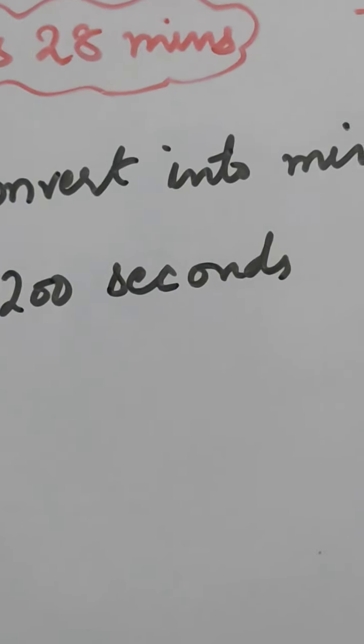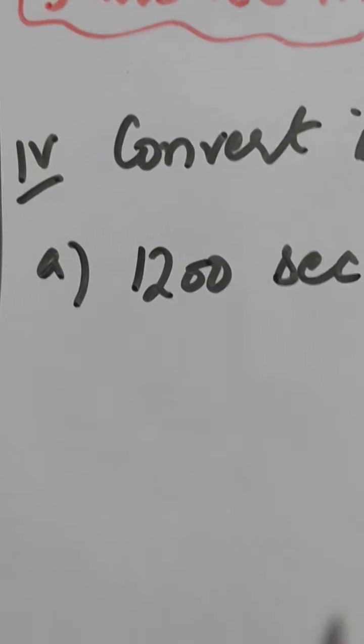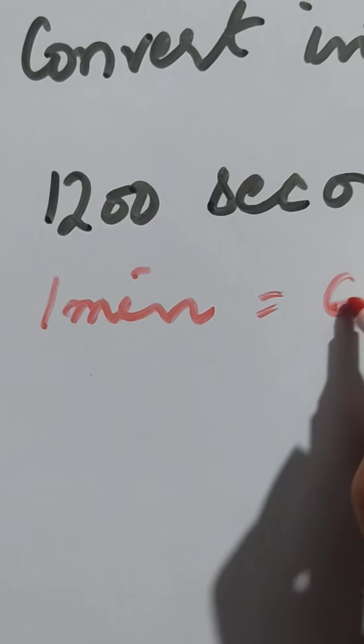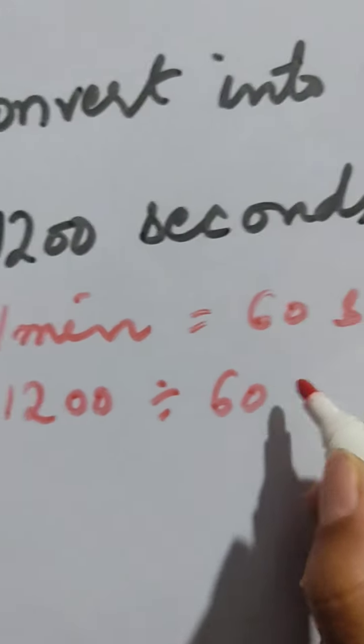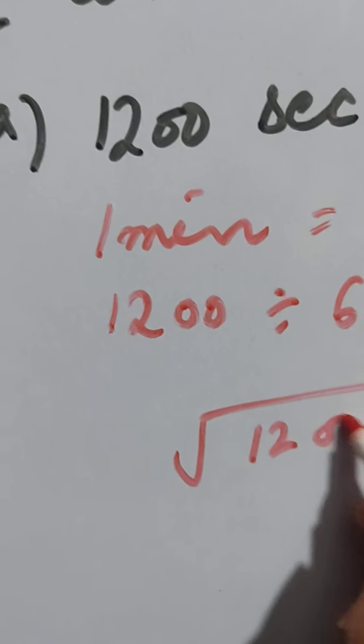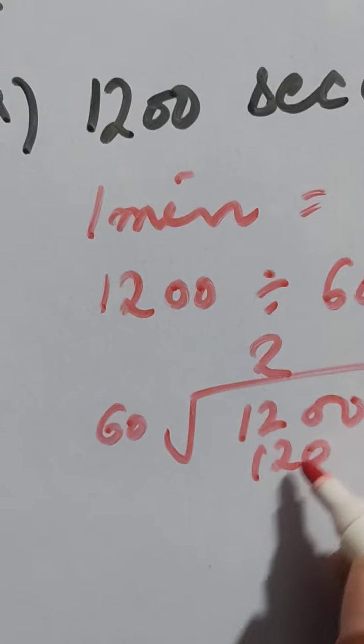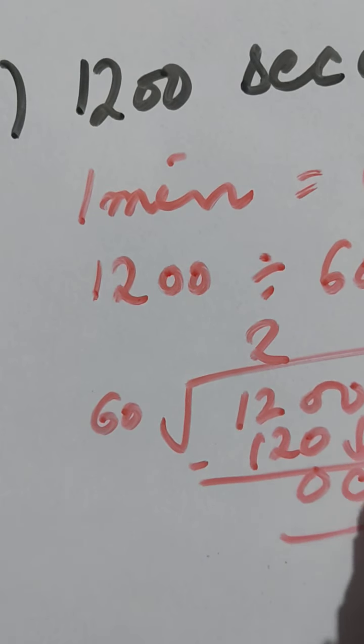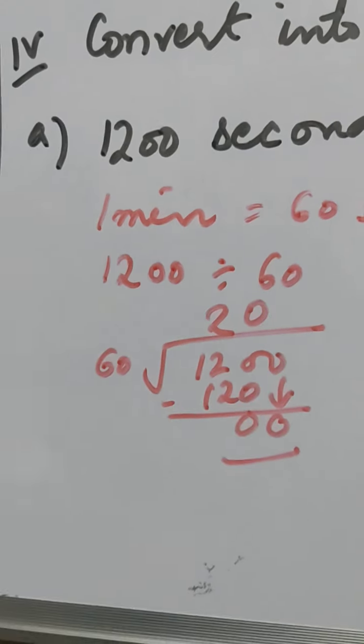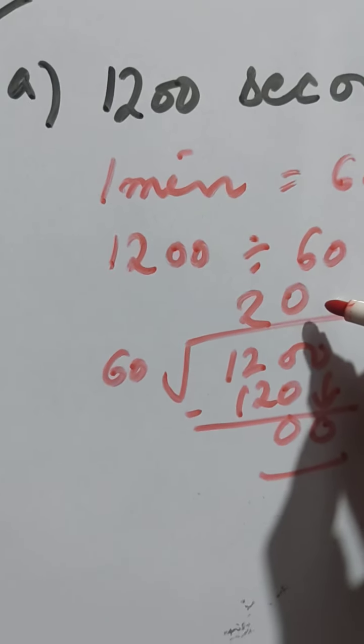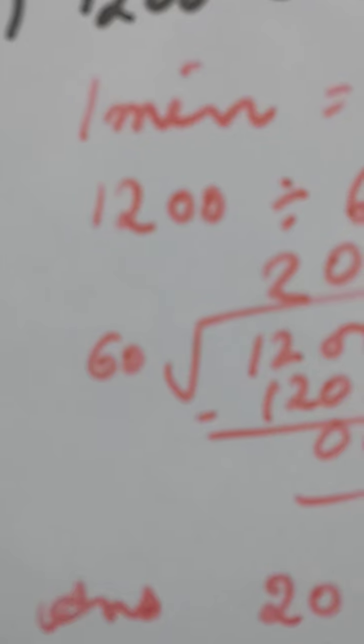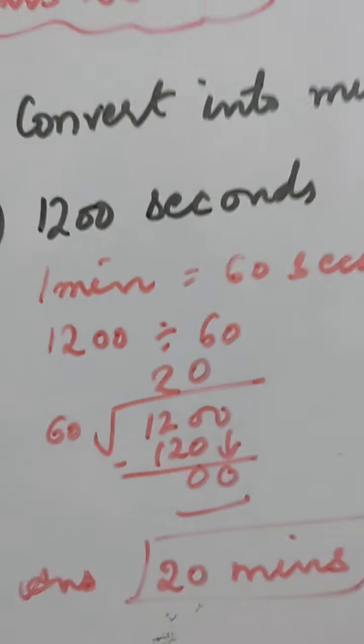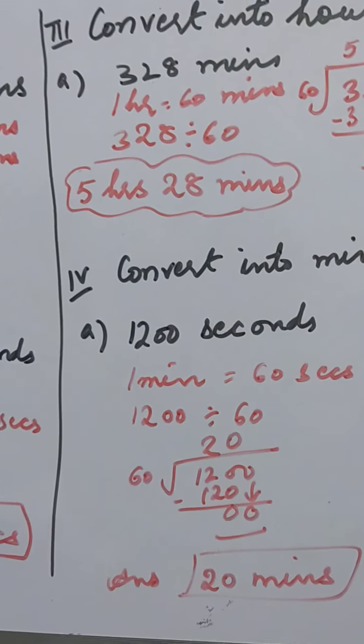Now convert into minutes. Seconds to minutes, second is the smallest unit and minutes is the bigger unit. Minute to seconds, again we are going to divide. So 1 minute equals 60 seconds. 1200 divided by 60. So 60 times 2 is 120. 0, this 0 is left over, put the 0 here. If the carry is 0 and your remainder is left as 0, then you put 0 on top also. Or you can say 60 times 0 is 0. So the answer is 20 minutes. 0 seconds need not be written, we can write this also.